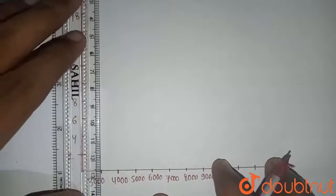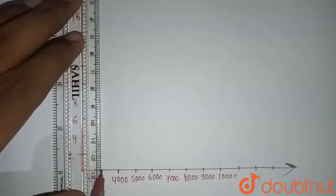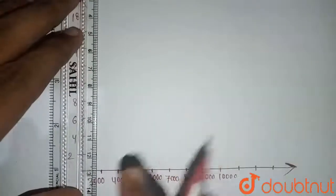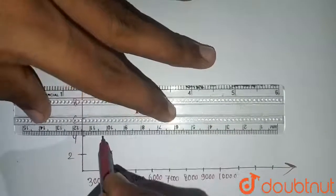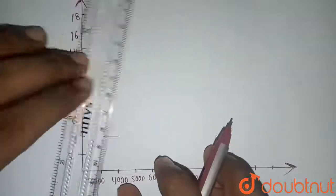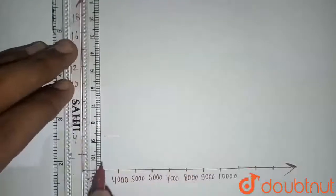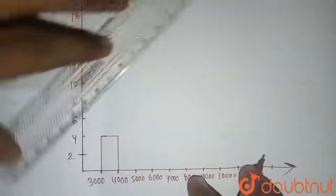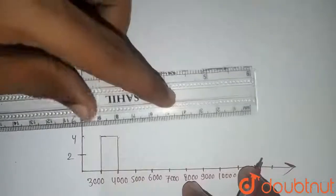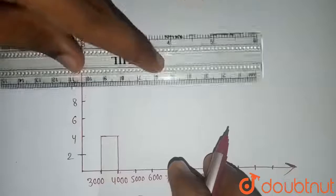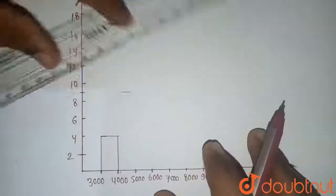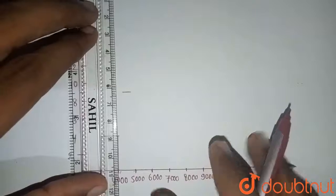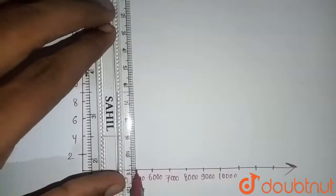The histogram starts from three thousand. From three thousand to four thousand, the number of people is four, so we draw a rectangle up to height four. From four thousand to five thousand, the frequency is nine — between eight and ten on the y-axis — so we draw that rectangle.